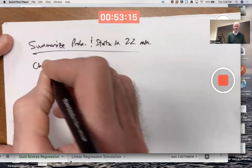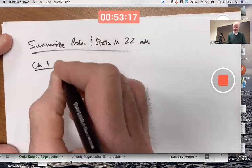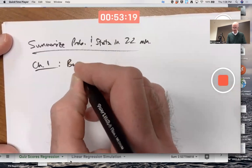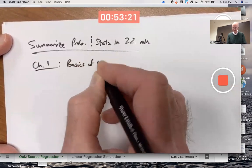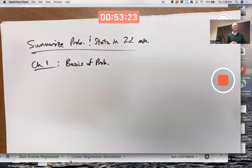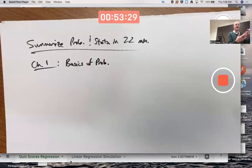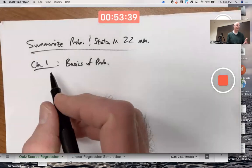Chapter one. What was it about? The basics of probability. We're trying to get to the statistics. We're trying to use probability models for statistics. That's what our statistics has been all about. So we need to learn probability first. And so what was in chapter one? Basic things like, what is probability?